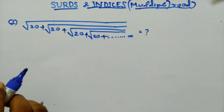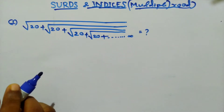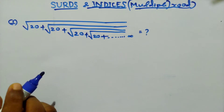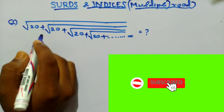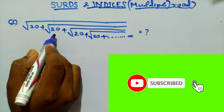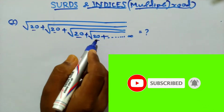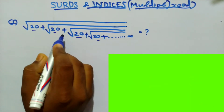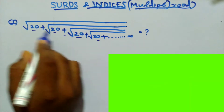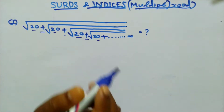Hello everyone, today I am going to show you how to solve surds and indices multiple root problems. Here you can do 20 plus root 20, up to infinity, where all the numbers and all the signs are the same.